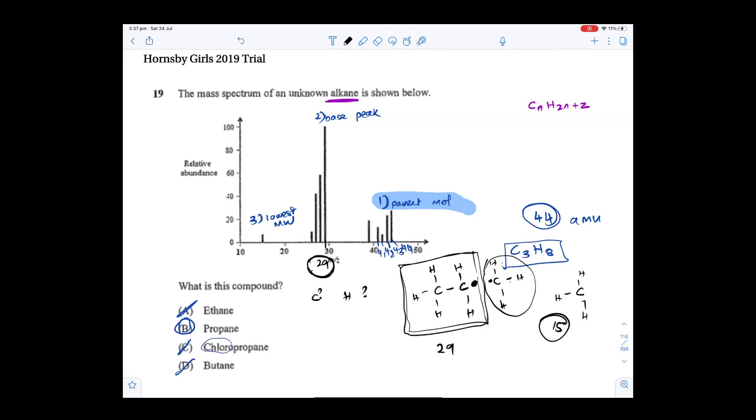Yeah, they'll always tell you the class of the compound. They can't - if they don't tell you, this could be anything, right? It could be a carbonyl group with anything, could be an acid, could be anything. So they always tell you the class.